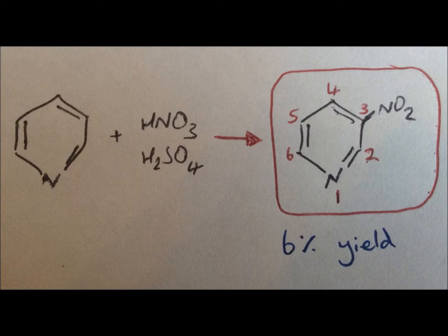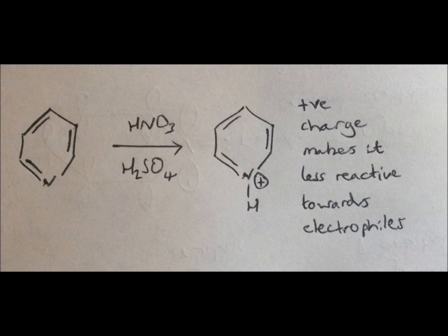But why only 6% yield compared to the 95% for the nitration of benzene? What explains this low reactivity? This can be explained by looking at the conditions used for nitration. Under these conditions, the pyridine acts as a base and accepts a proton. The nitrogen atom becomes positively charged. This prevents the compound from reacting with an electrophile, another positively charged species.